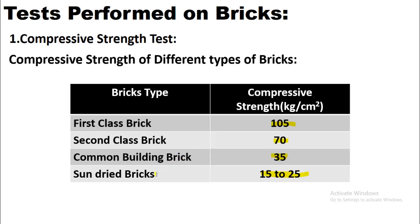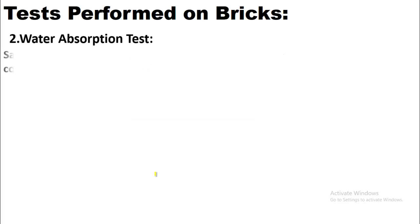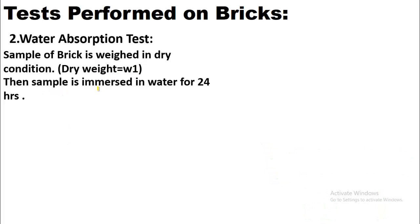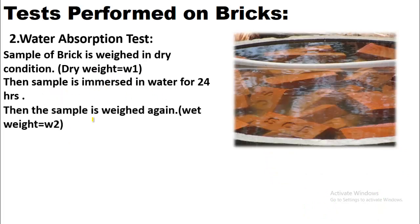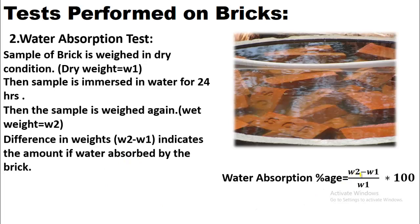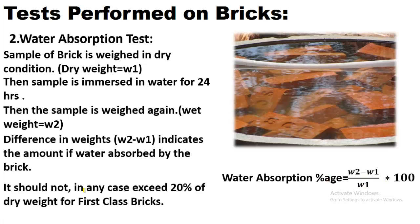The second test is the water absorption test. A sample of brick is weighed in dry condition as W1. The sample is then immersed in water for 24 hours, then weighed again as W2. The difference in weights indicates the amount of water absorbed. The percentage is calculated as: (W2 minus W1) divided by W1, multiplied by 100. This percentage should not exceed 20% of dry weight for a first class brick; if it absorbs more than 20%, it is not considered first class.